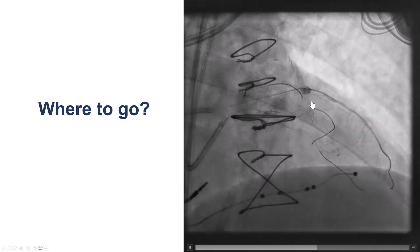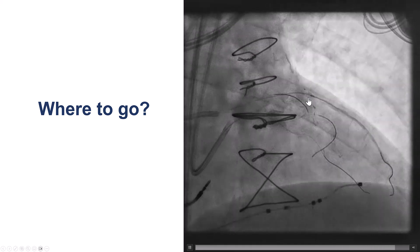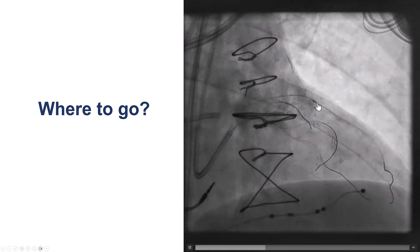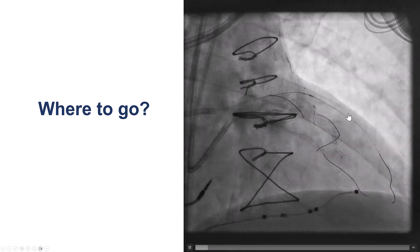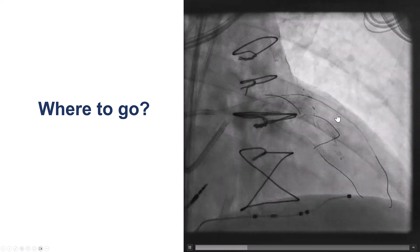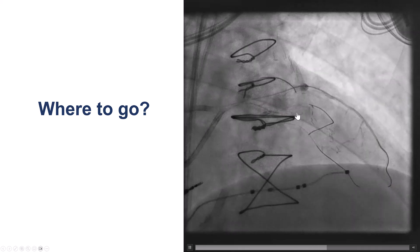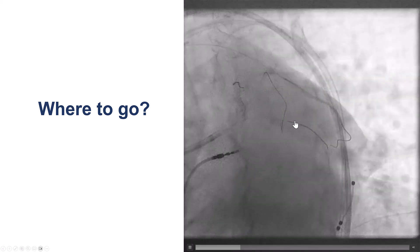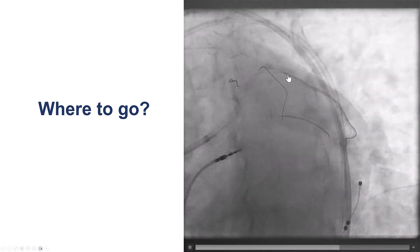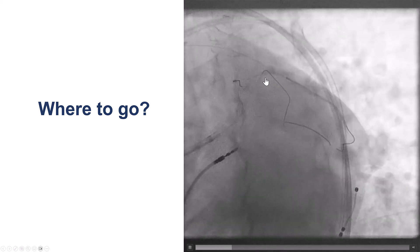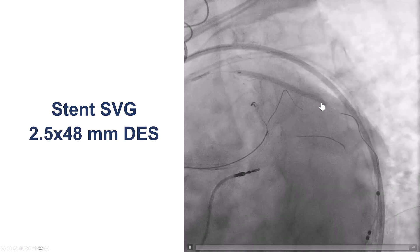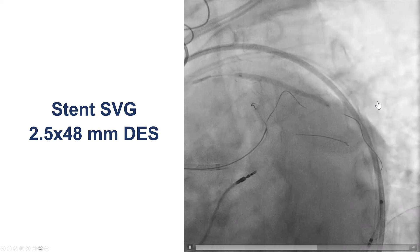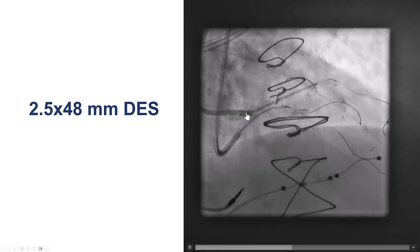After multiple attempts and after giving a significant amount of contrast, we just could not figure out the proximal cap and the distal cap. Literally, there is just flow straight into the distal diagonal — we don't see any backwards flow. So after multiple attempts, we decided to stent the saphenous vein graft. We placed two drug-eluting stents all the way from the distal anastomosis back to the ostium.